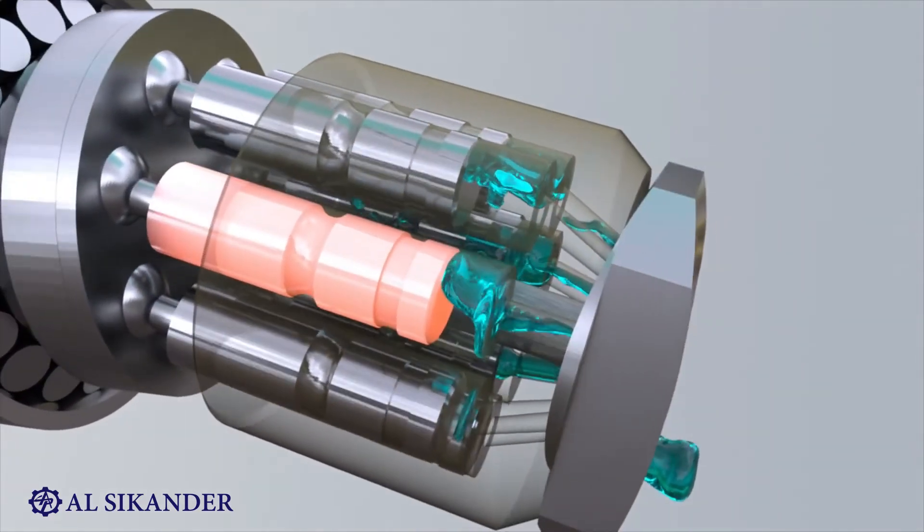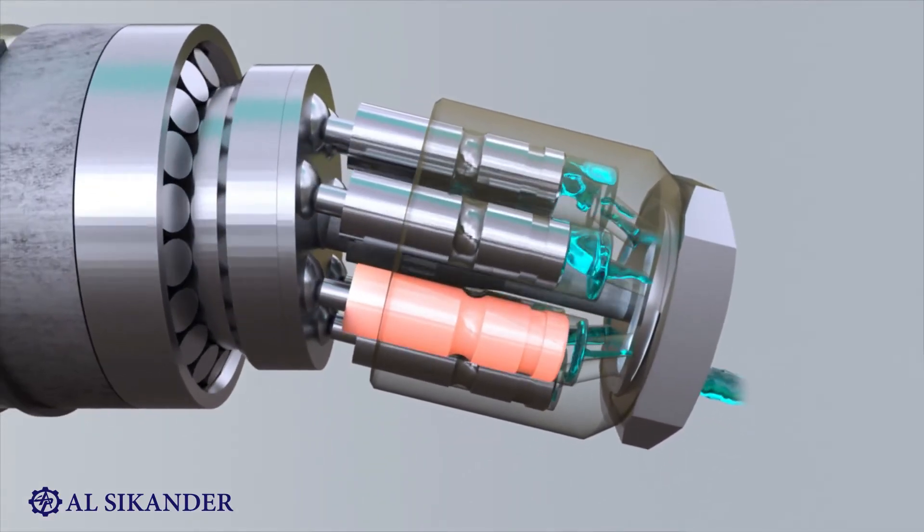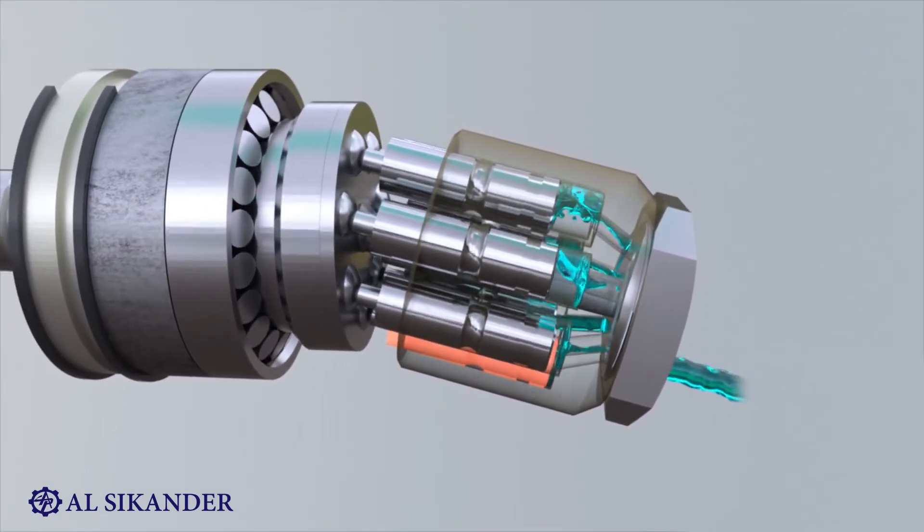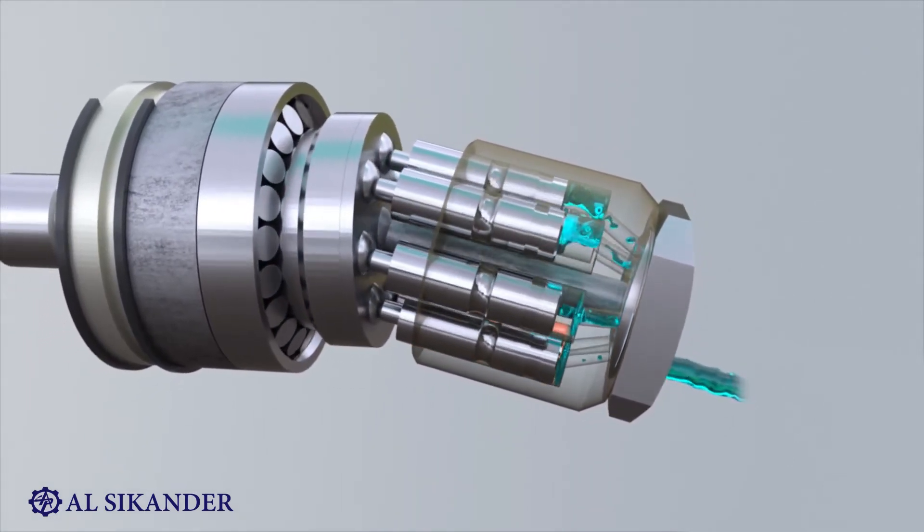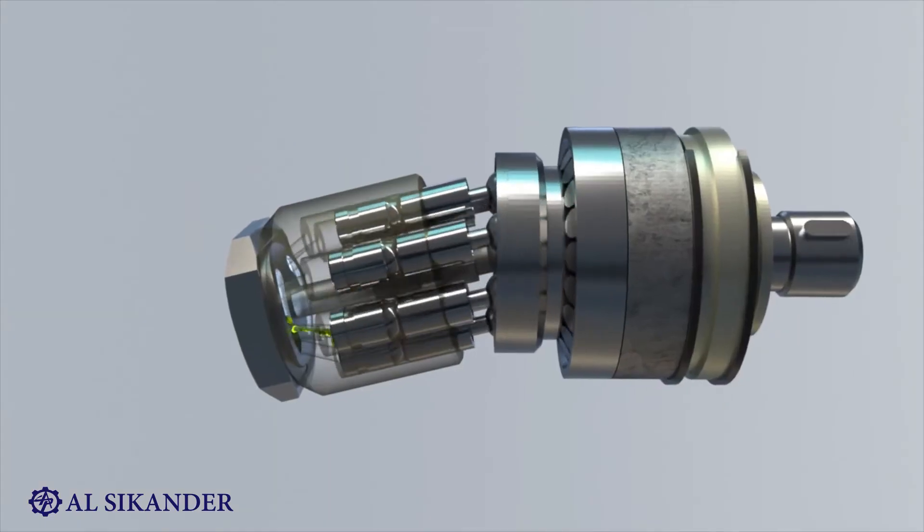When the piston reaches the end position, it moves in the opposite direction, reducing the volume of the chamber. The liquid is forced out into the pressure channel. Having reached the second extreme position, the piston starts to increase the volume of the chamber again and suction begins. The cycle repeats.